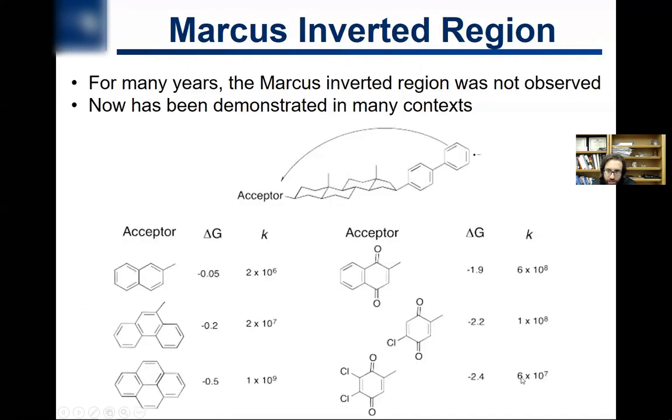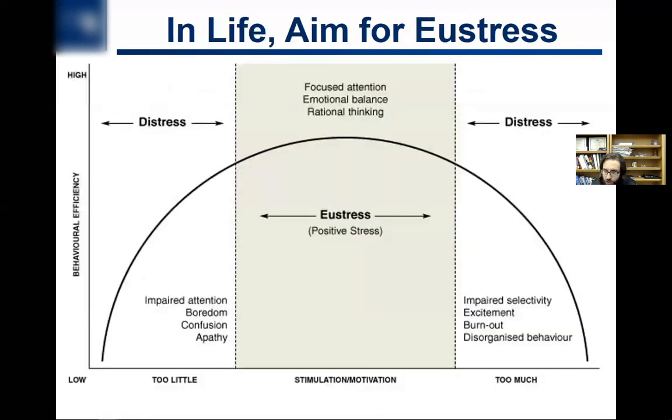So the Marcus inverted region is just one of these amazing things of science. Once that was validated, that's part of the reason why Marcus got the Nobel Prize, because it's just so counterintuitive and powerful.